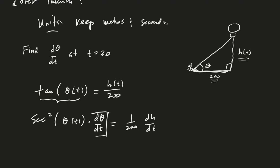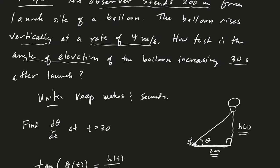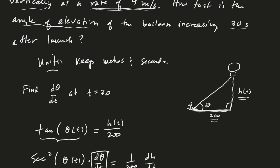Hmm, I don't think so. What do we need? Let's see, at 30 seconds the balloon is rising at a rate of four meters per second, right? So we know that dh/dt is constant at four.